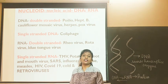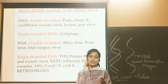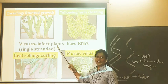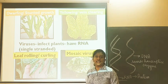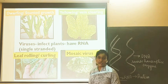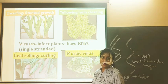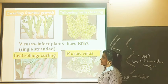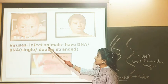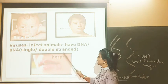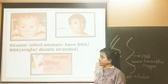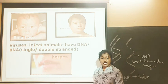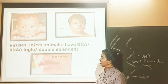The HIV viral DNA infects all the T lymphocytes of our body. The viruses which infect plants are usually single-stranded RNA. The viruses that infect animals including human beings have either DNA or RNA, which can be single stranded or double stranded.